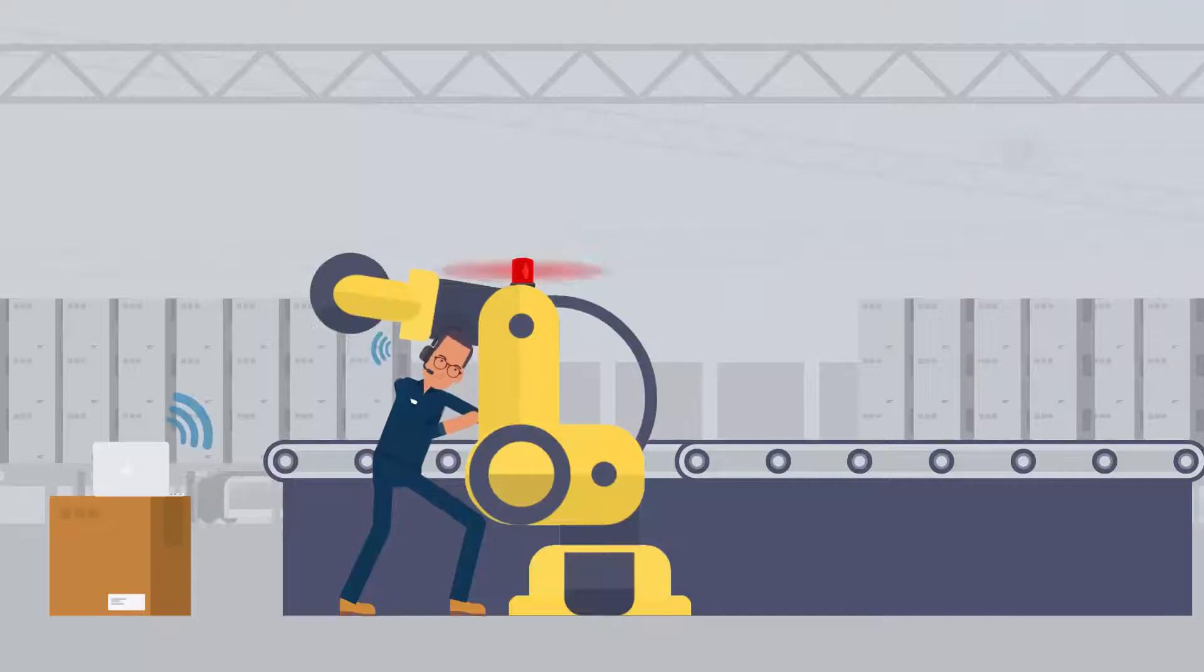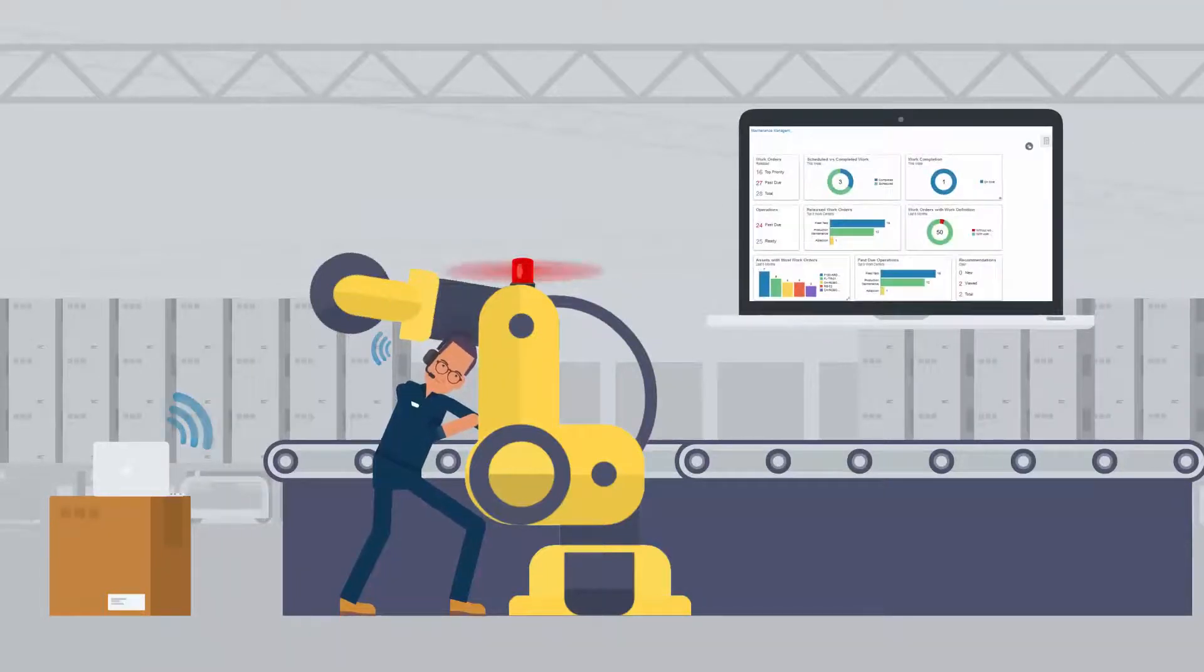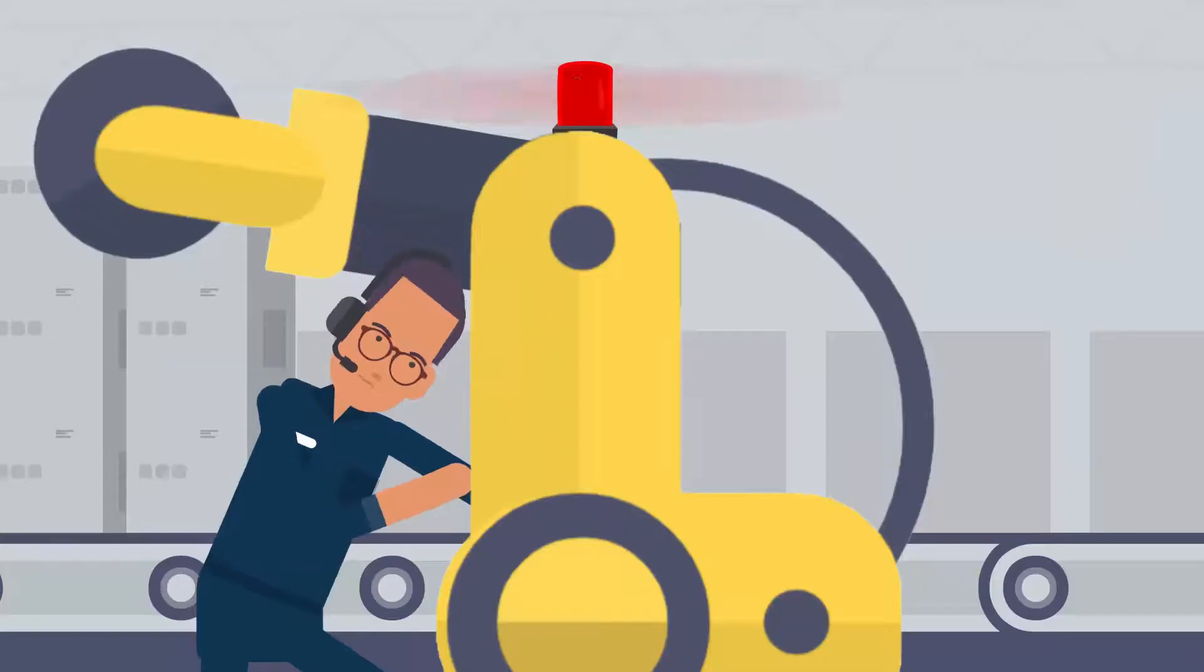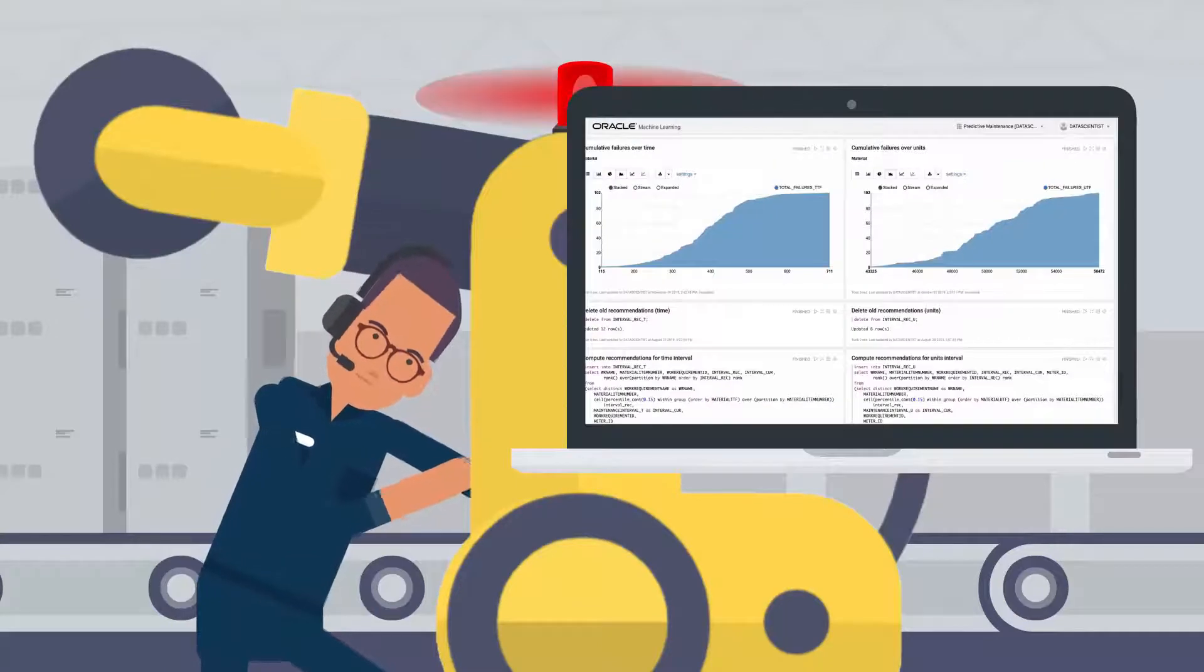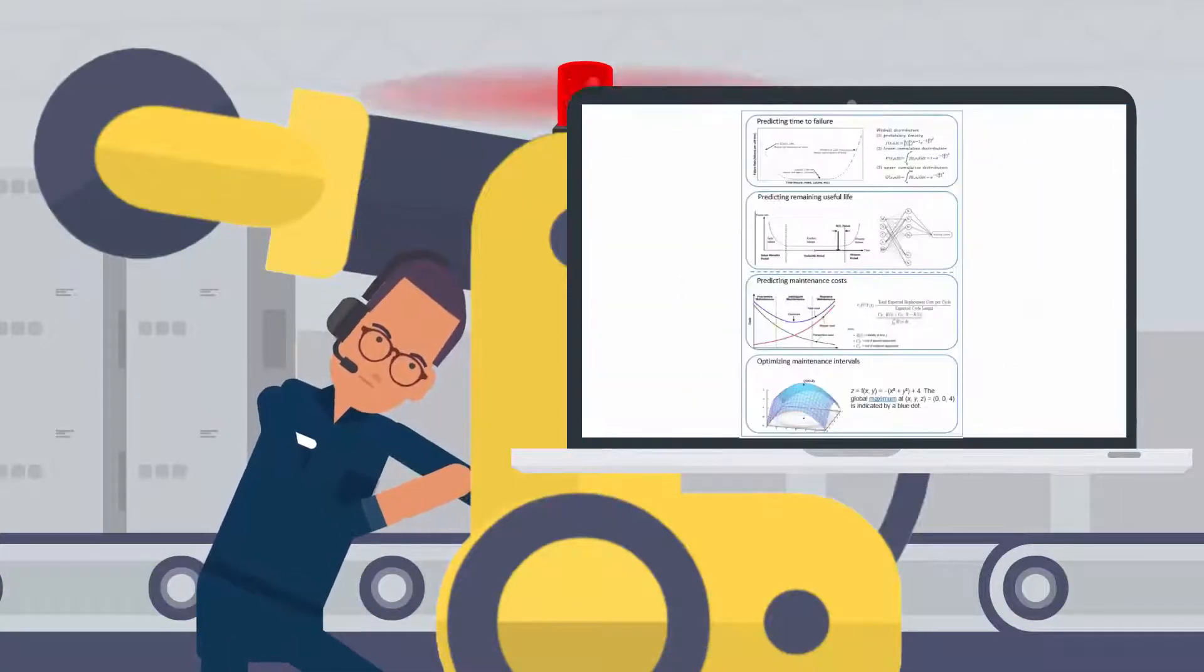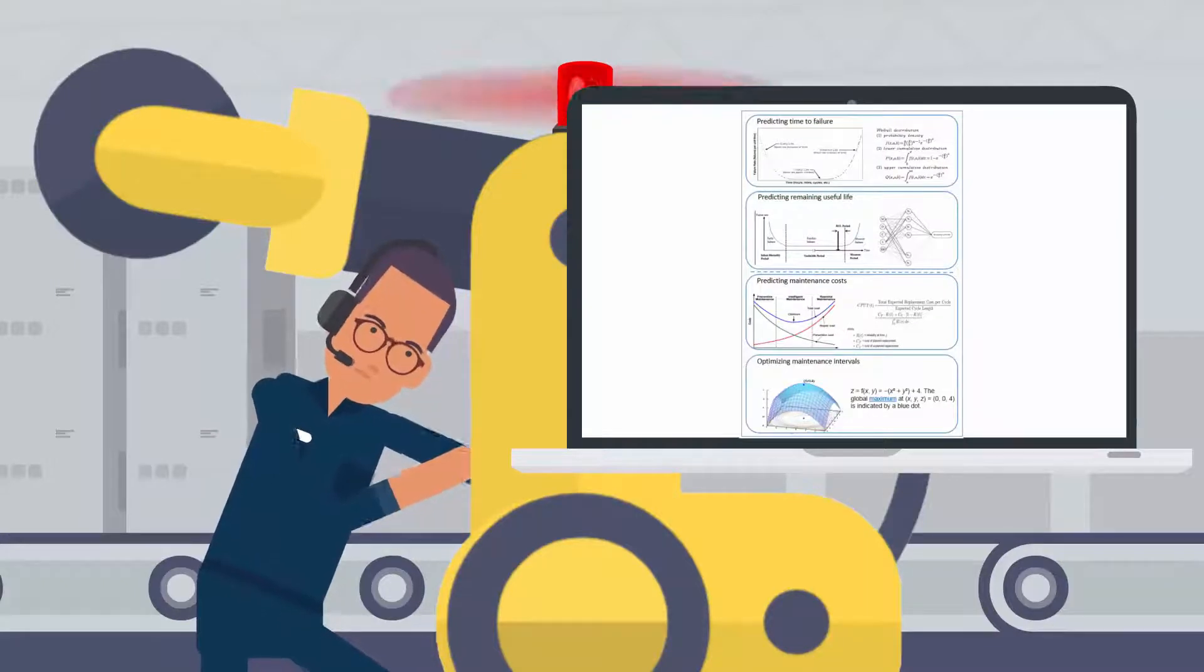The Digital Assistant provides a voice interface to both the Oracle Maintenance Cloud and the Autonomous Data Warehouse, while keeping Peter's hands free to do the work. The Autonomous Data Warehouse builds machine learning models using the data from the Maintenance Cloud application, then uses those models to make predictions and recommendations for each work order.